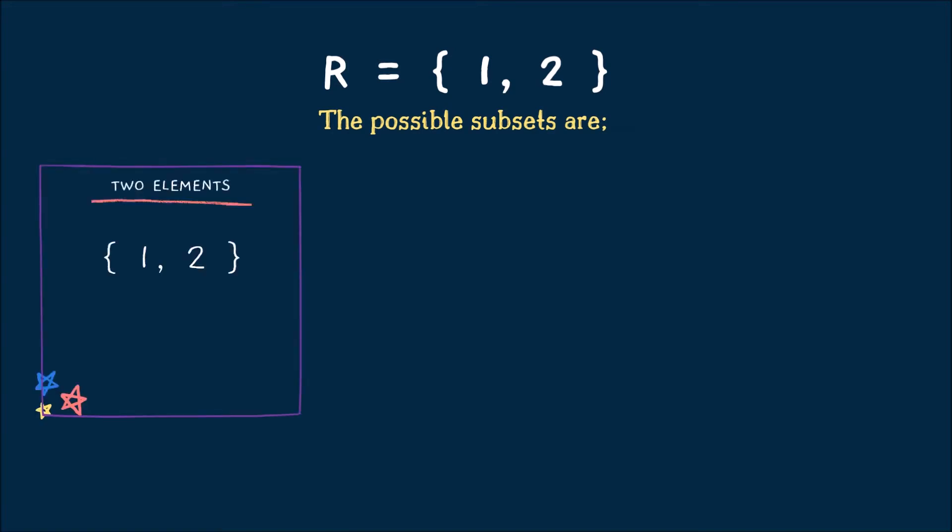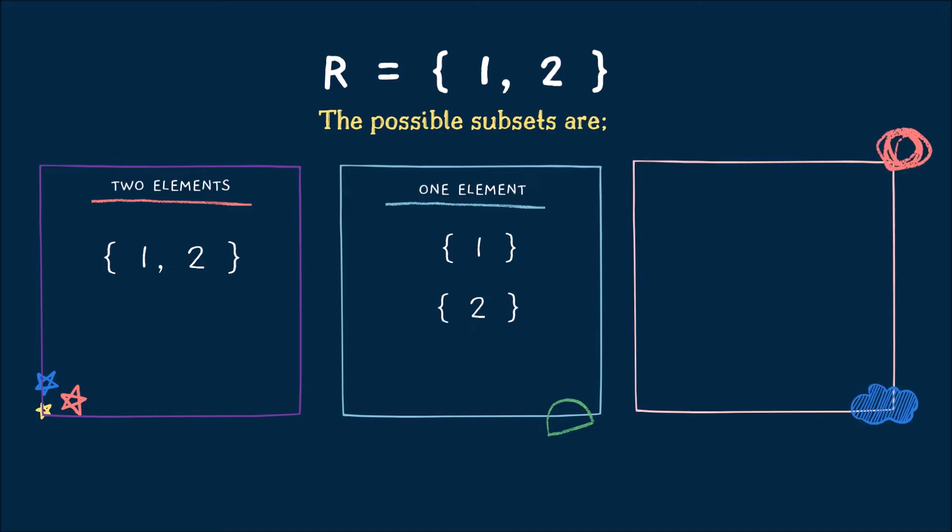Now, let's have an example. If you are given set R equal to numbers 1 and 2, the possible subsets are the following. Now, for two elements, we have 1, 2, or the set itself. Now, for one element, we have subset 1 and subset 2. Now, for the zero element, we have a null set. So, always remember that every set is a subset of itself and empty set is also a subset of every set.